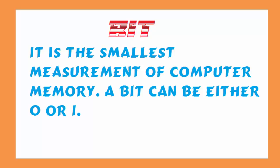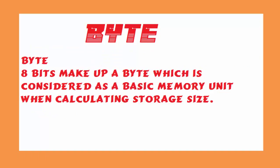First, I am going to discuss bit. This is the smallest unit of measurement of computer memory. It can be 0 or 1. If you study logic gates — NAND and OR gates — you can see that 0 means the circuit is switched off and 1 means the circuit is on. It is also like that.